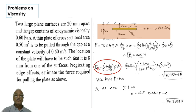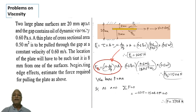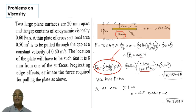Similarly, fv2 uses the same equation. Substituting: mu is 0.6, velocity is 0.6 meter per second, but the lower oil film thickness is 12 mm (12 into 10 raised to minus 3 meters), and area is 0.5 meter square. This gives fv2 equal to 15 Newtons. Note: greater thickness means less viscous resistance.